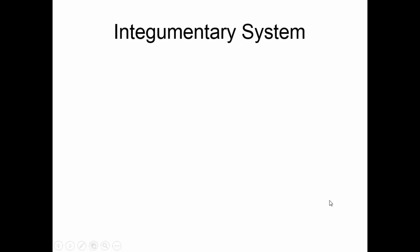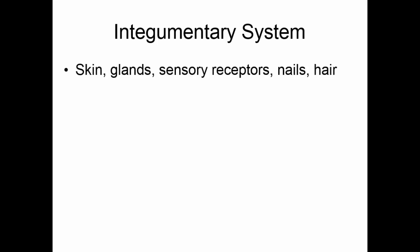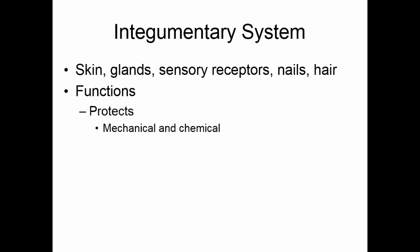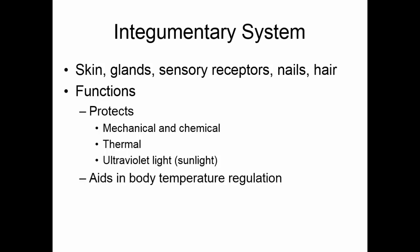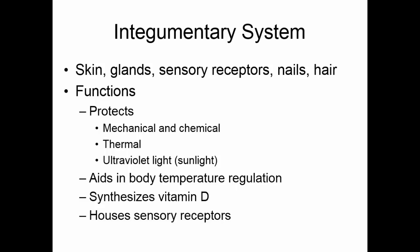The first system we're going to talk about is the integumentary system. Systems are made of groups of organs — so we have the skin, the various glands of the skin, the sensory receptors, the nails, and the hair. The integumentary system primarily protects, providing mechanical, chemical, and thermal protection, as well as protecting us from ultraviolet light. It also aids in body temperature regulation, synthesizes vitamin D, and houses sensory receptors that allow us to pick up messages from the external environment.